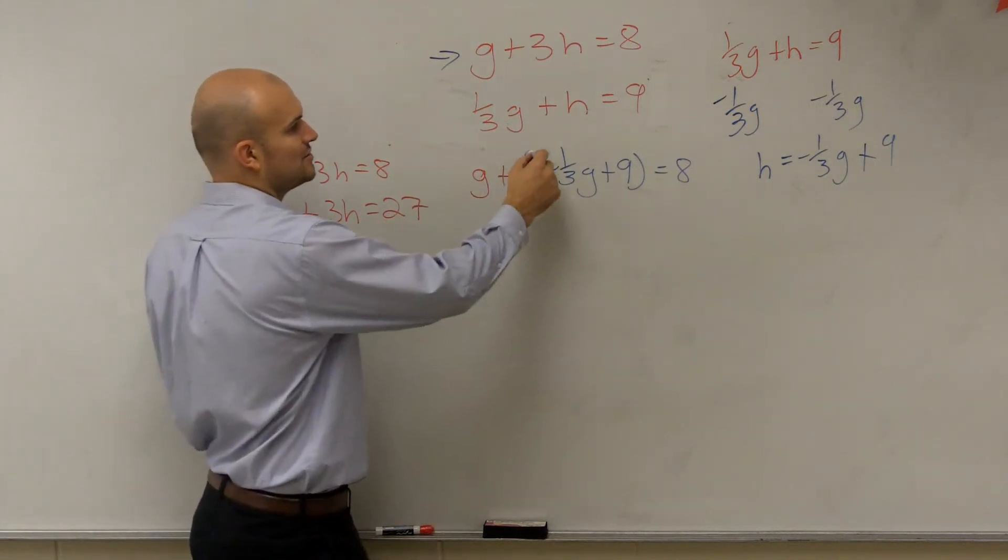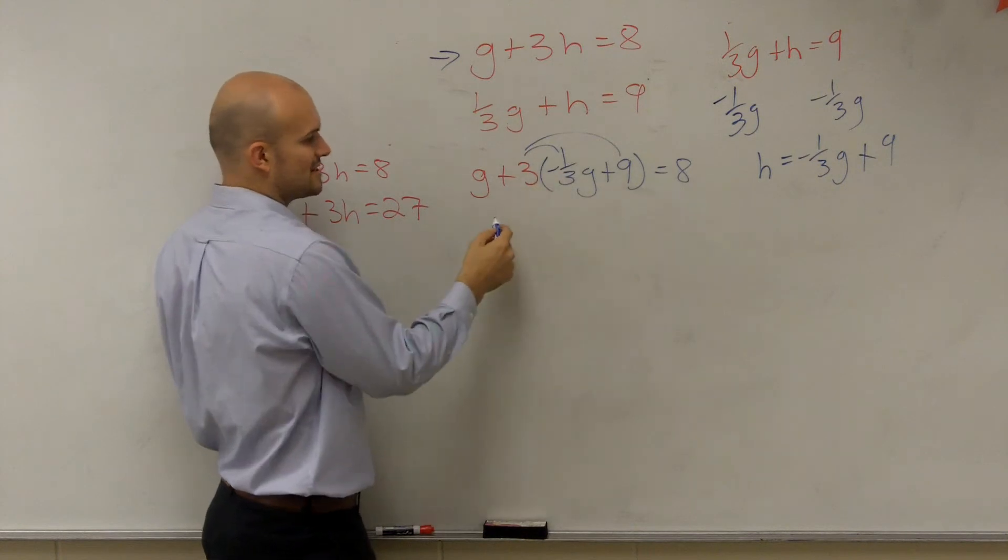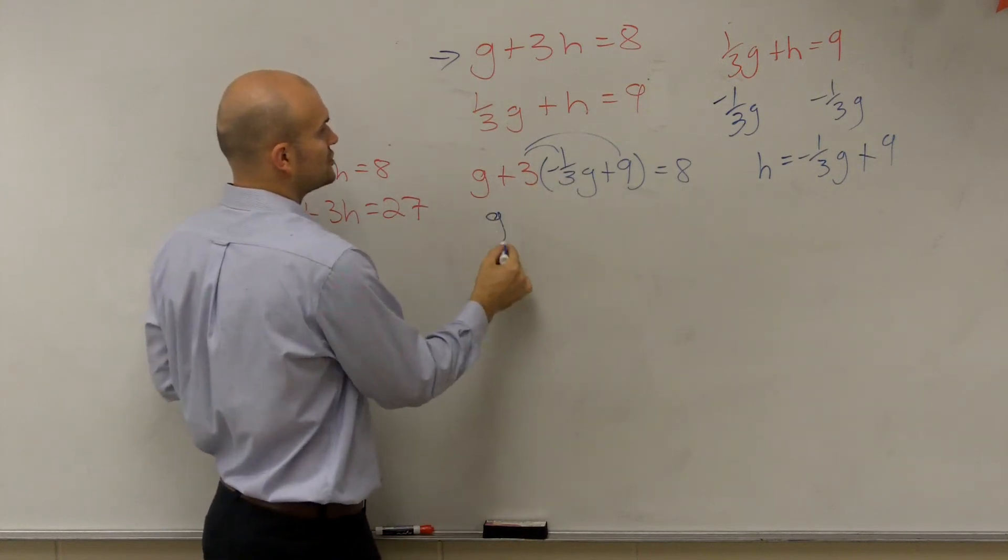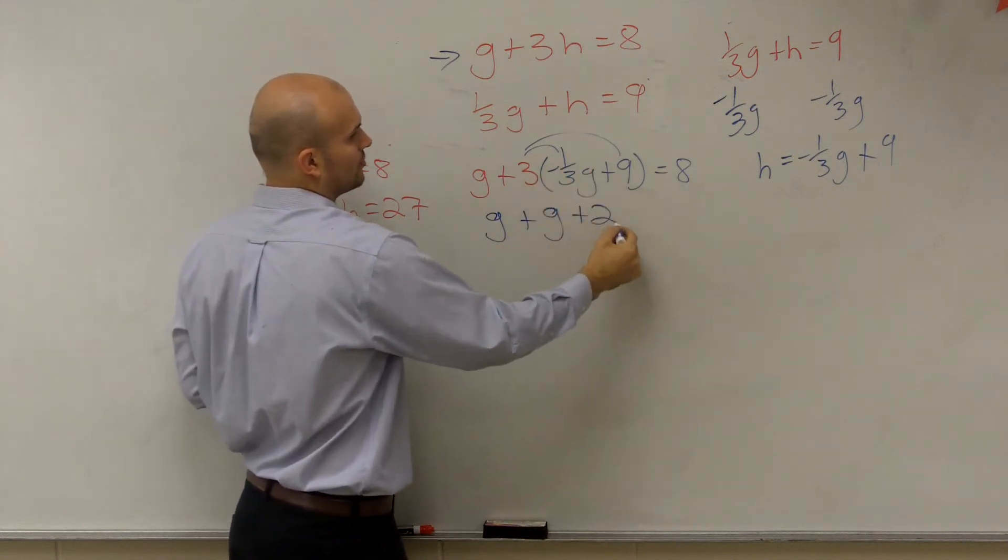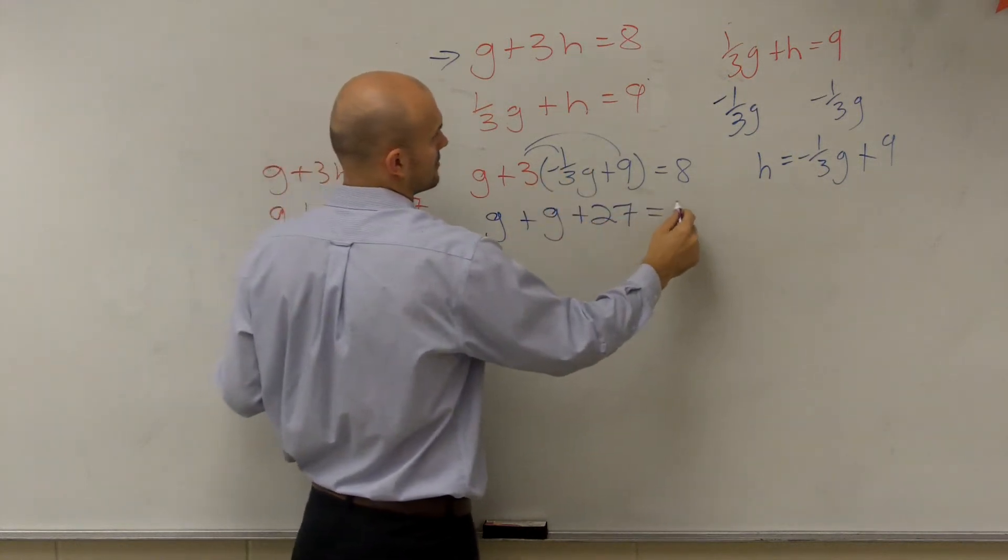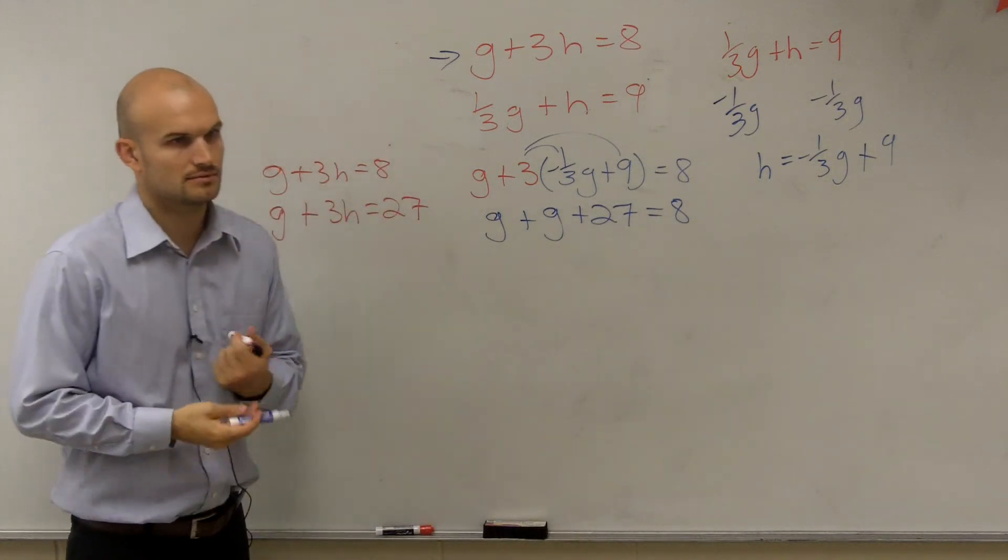So now, we've plugged this in. When I use distributive property, that cancels out anyways. So I'm left with g plus g plus 27 equals 8. Yes?